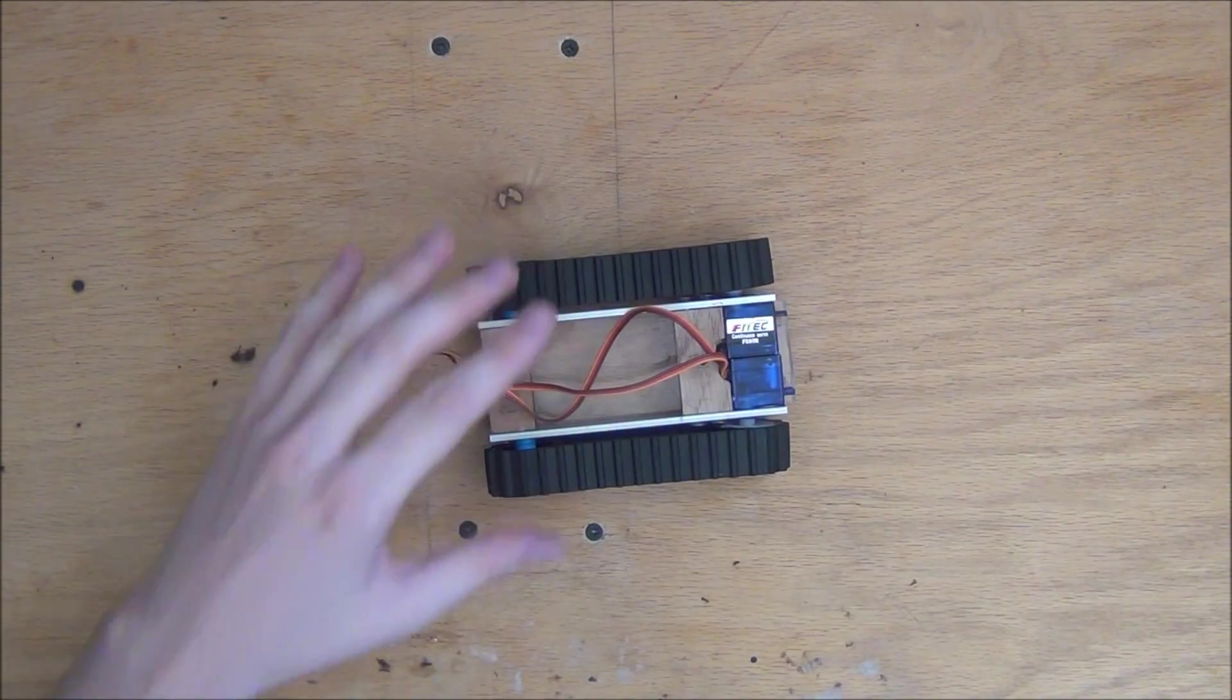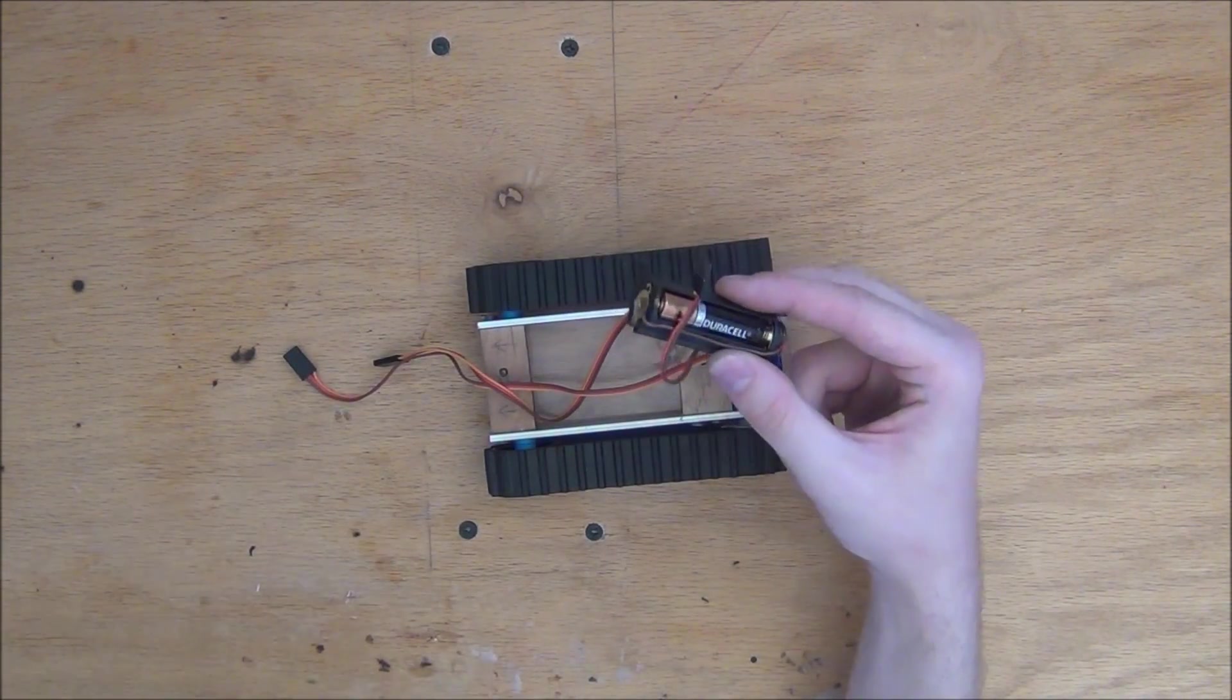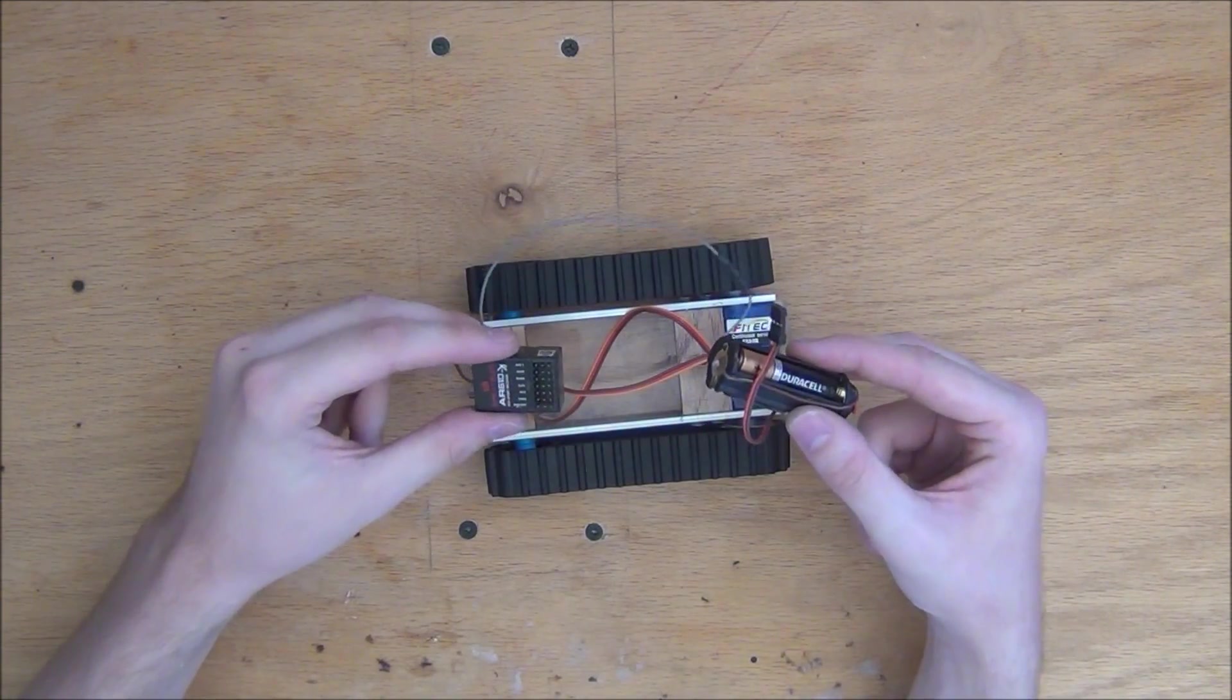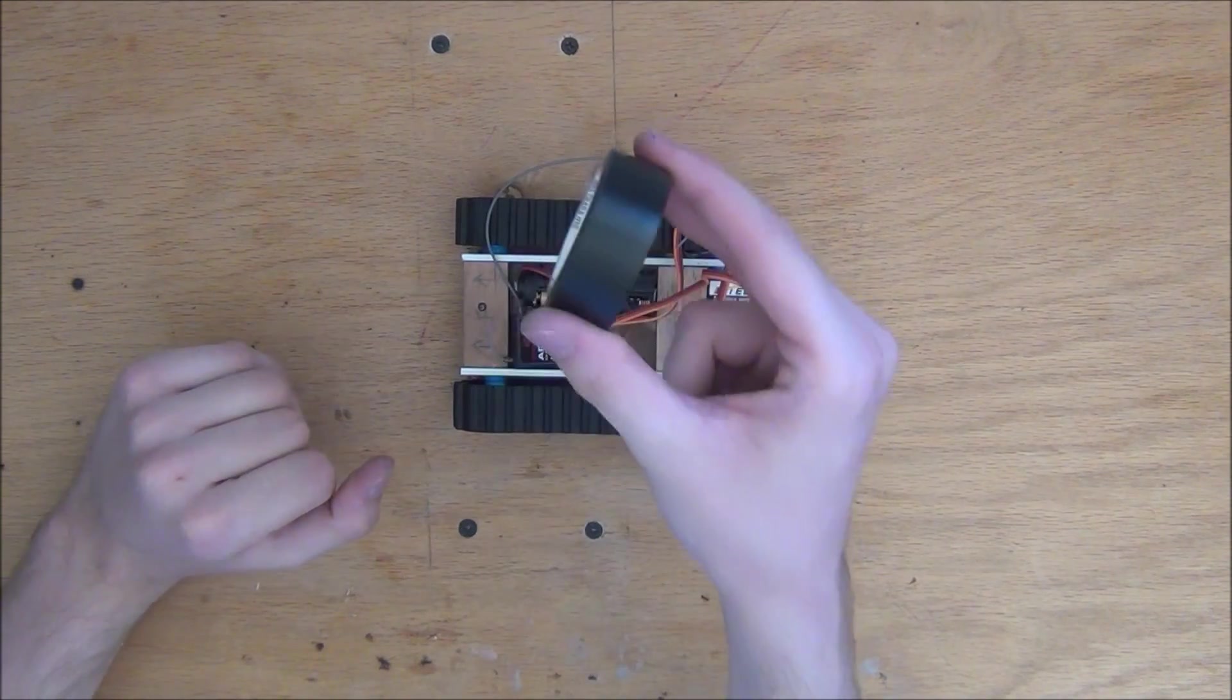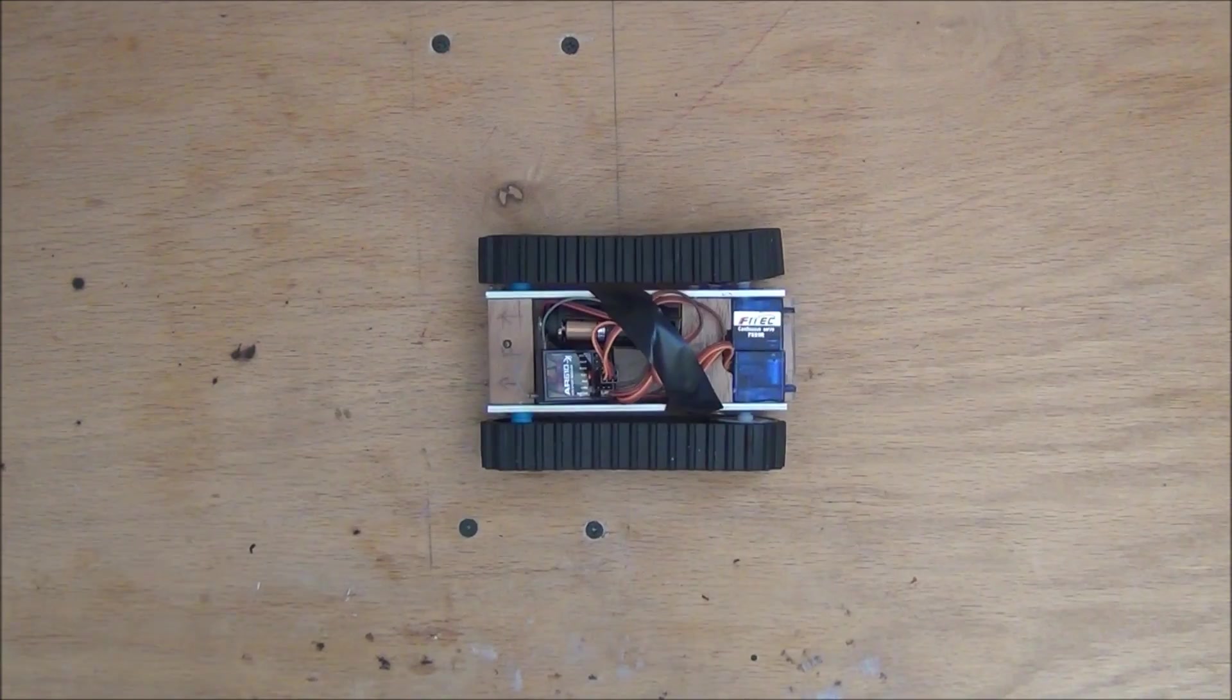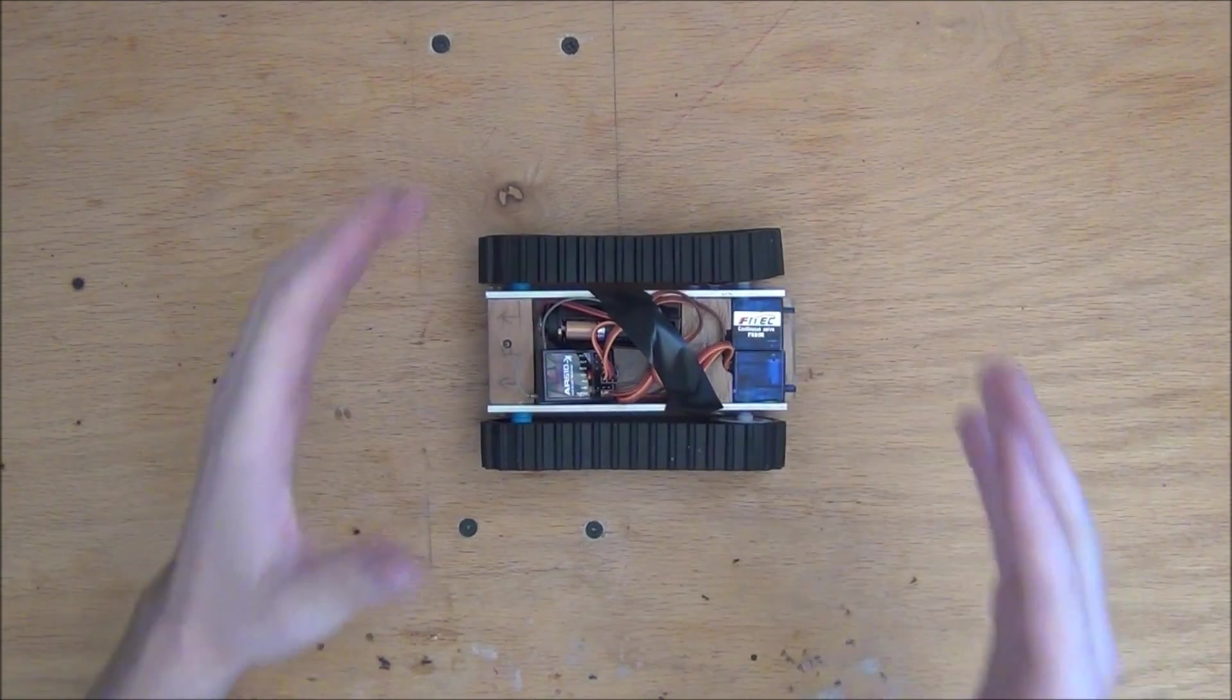So once the tracks are on, we can now go ahead and put in our battery pack and receiver and plug everything in. As you can see, my wires are kind of all over the place. So I'm going to take a little bit of electrical tape and tape them down so it's easier to manage. And now with that, the base of your tank is complete.